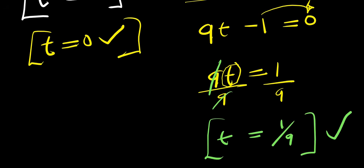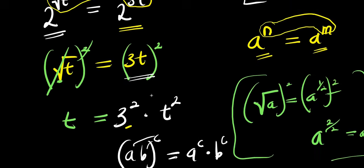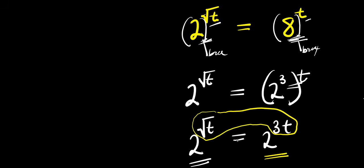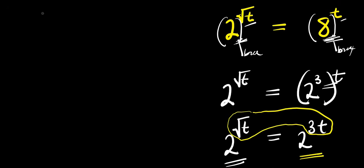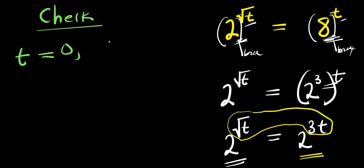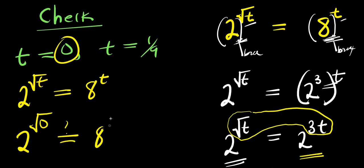We now have two solutions. The next step is to check each solution by substituting back into the original equation: 2 to the power of root t equals 8 to the power of t. Let's start with t equals 0: we have 2 to the power of square root of 0. Is this the same as 8 to the power of 0?